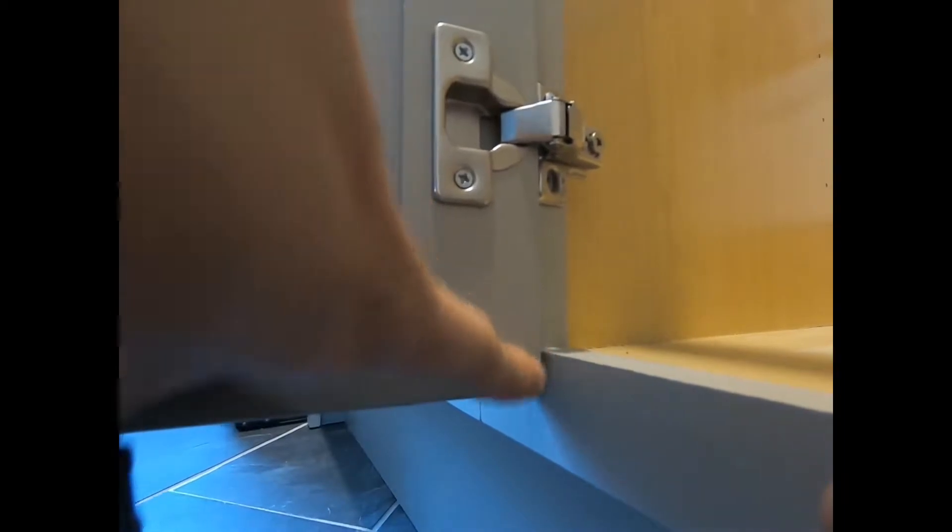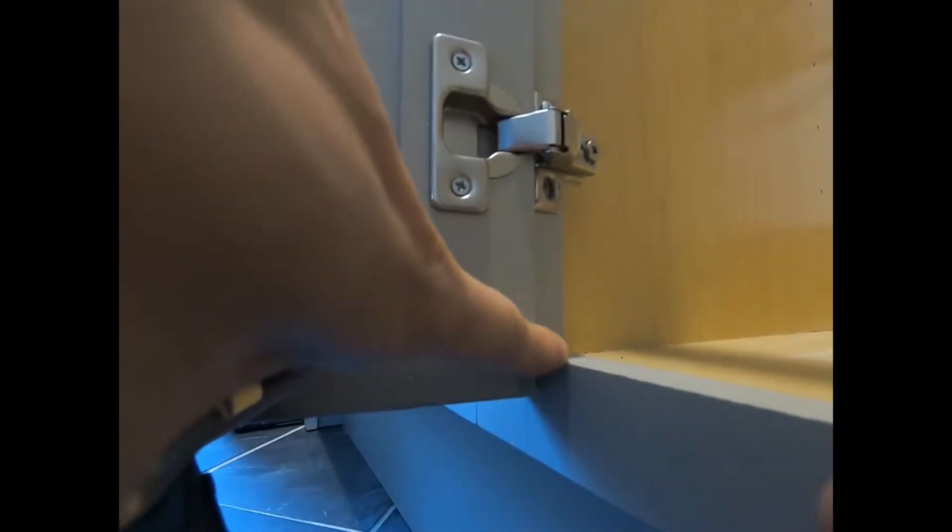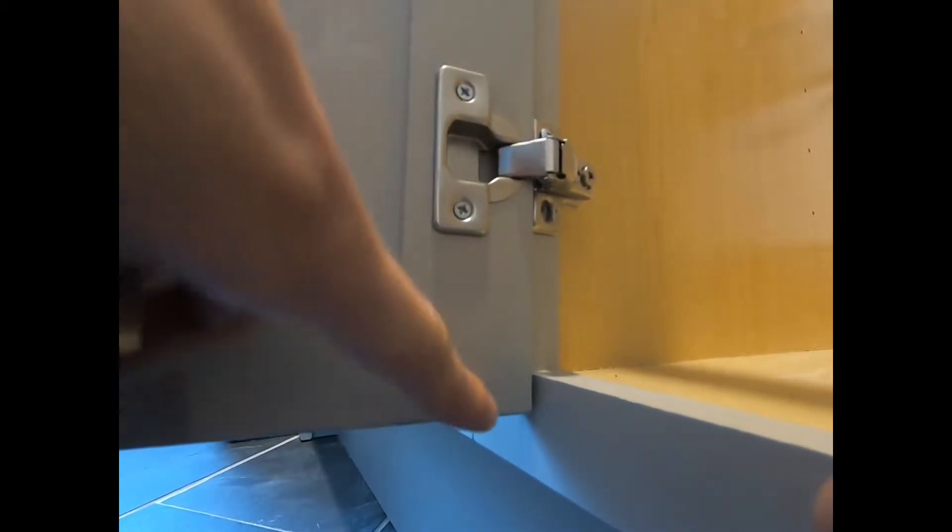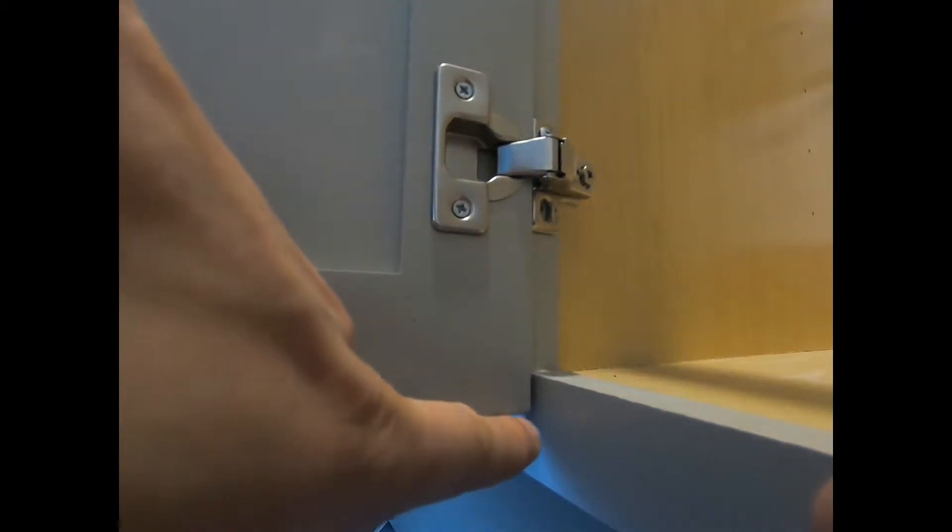And for me, that was half inch. Now I'm going to leave one-eighth inch clearance so the hamper pullout slides in and out with no contact. So for me, my distance is going to be five-eighths.